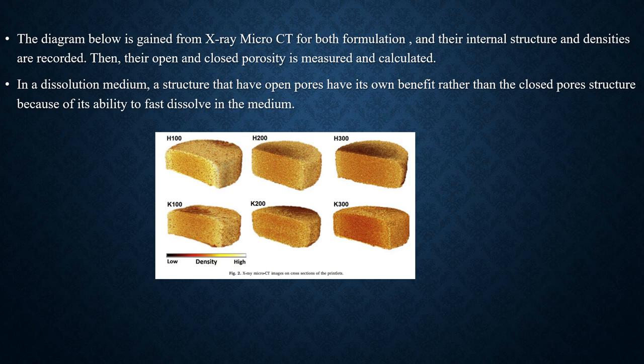A structure that has open pores has its own benefit over closed pore structures because of its ability to fast dissolve in the medium. In both HPMC and Kollidon formulations, the porosity trend follows a similar pattern: printlets subject to higher laser scanning speeds are more porous, which is in agreement with their lower mass. As seen in the diagram, higher density is referred to by lighter color and lower density by darker color.